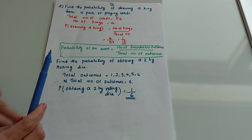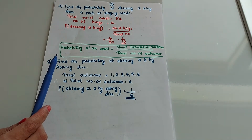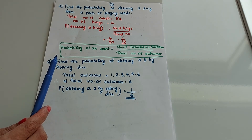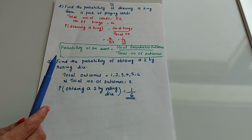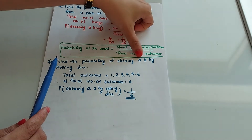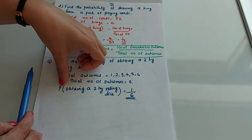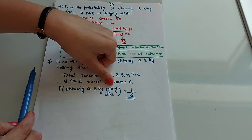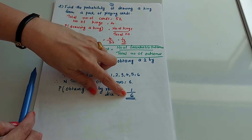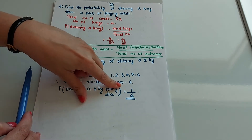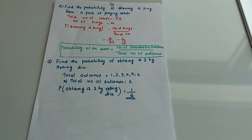Third question: find the probability of obtaining a 2 by rolling a die. When you roll a die, the outcomes are 1, 2, 3, 4, 5, or 6 — so there are 6 outcomes. The favorable outcome is getting a 2, so probability of obtaining a 2 equals 1 by 6.